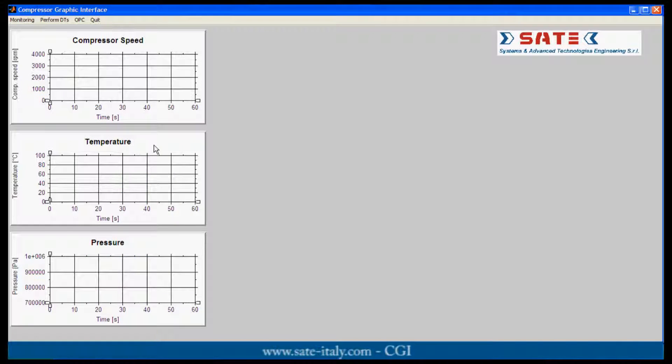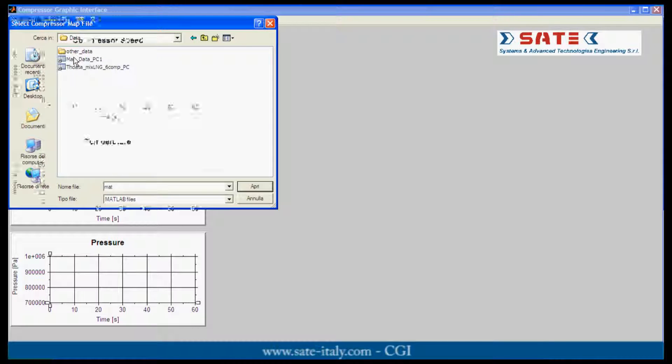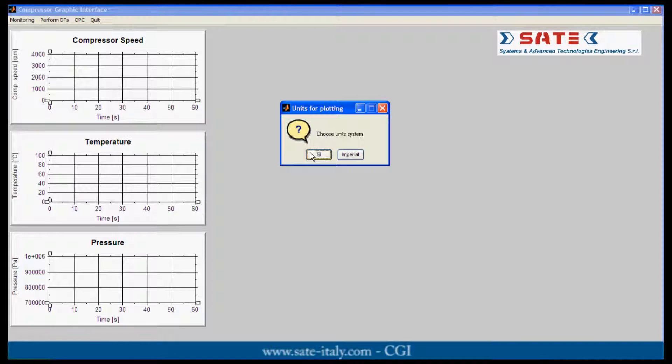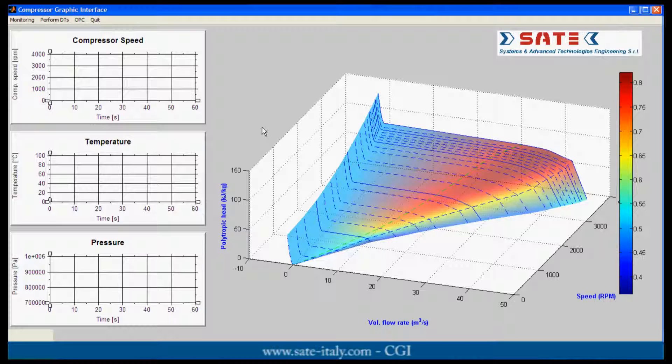To display the 3D plot it is necessary to load first the map data, then the thermodynamic data. The map is displayed using the International System Units. The 3D compressor map shows the polytropic head versus the compressor speed and the volume flow rate.